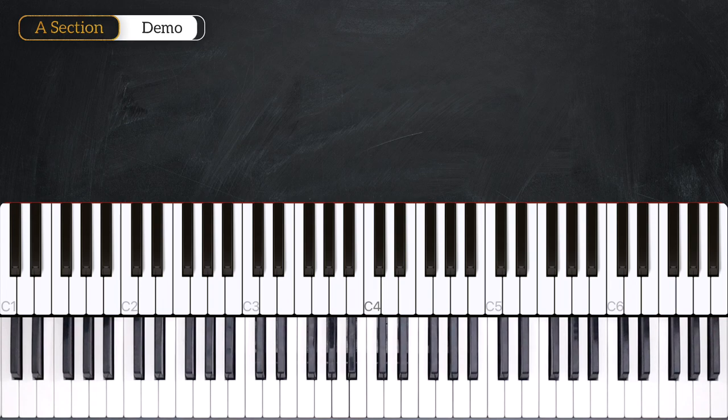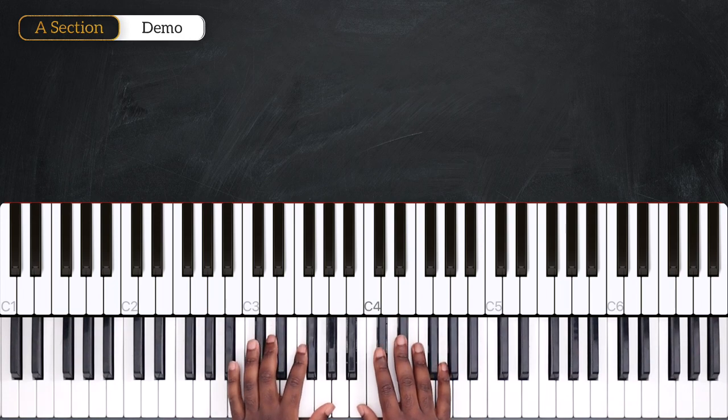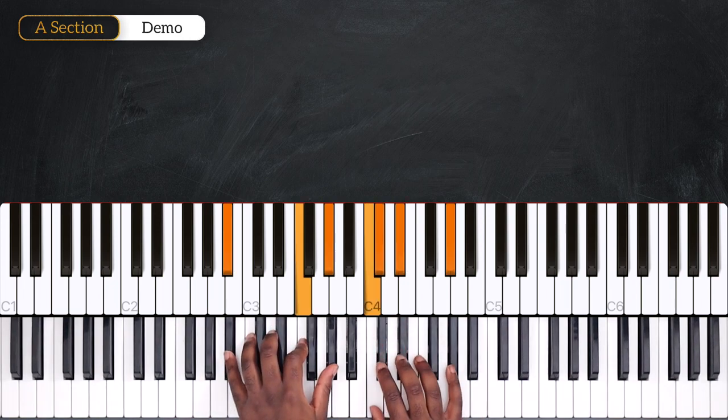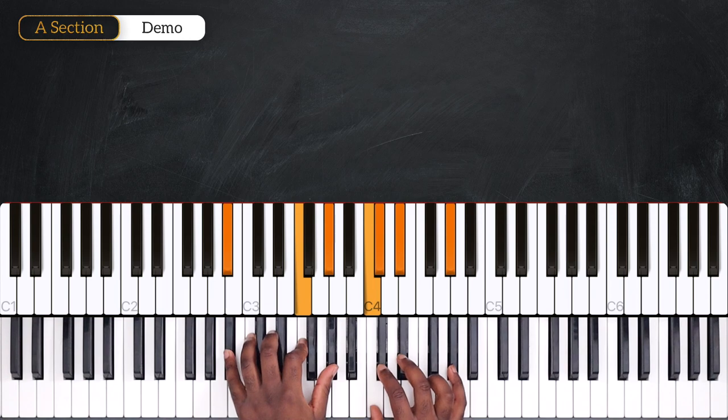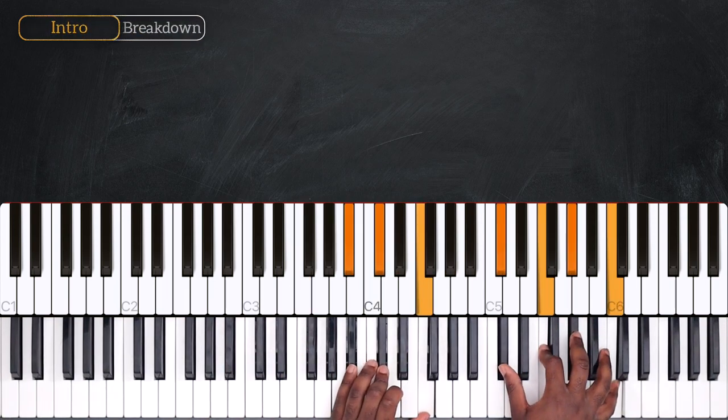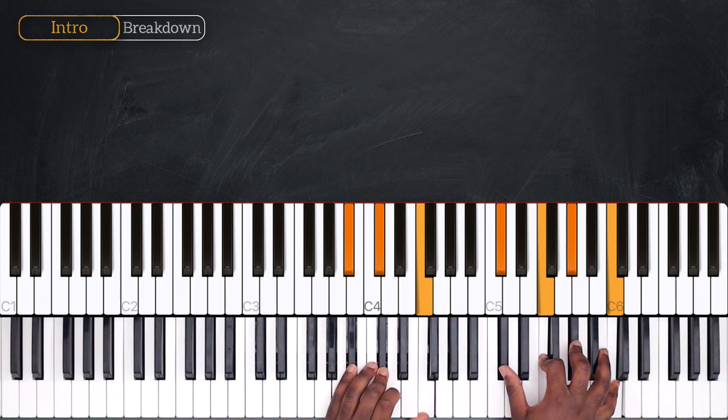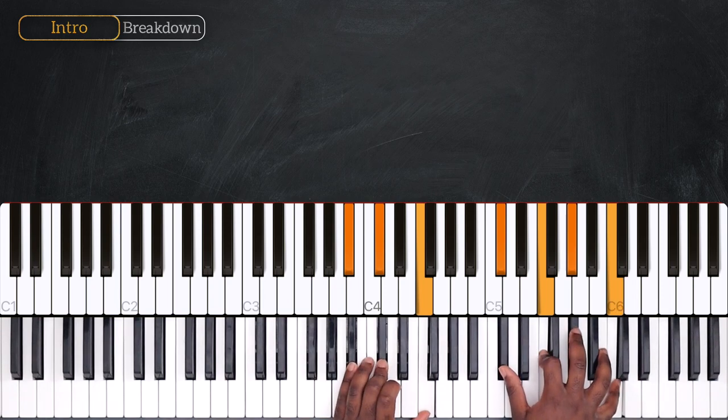All right, for this first part I'm going to break down for you the intro and also the A section. So here we're playing in the key of Bb minor and we're going to start outlining this Bb minor 9 chord with Bb, Db, F, Db, F, Ab and C, playing this way.